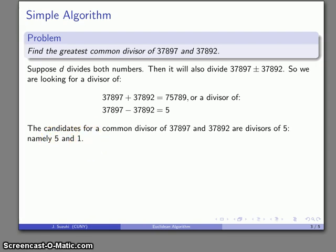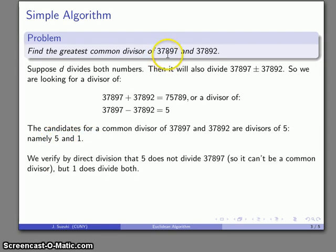And I can take a look at the two numbers themselves. And by inspection, or dividing if I don't notice that this is the case, five does not divide 37,897. So whatever the common divisor is, it can't be five, which means it has to be one. And so one is the greatest common divisor of the two numbers.